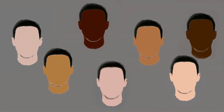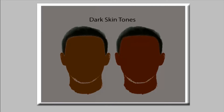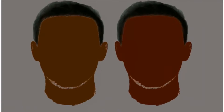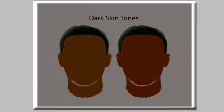Next we're going to look at skin complexions when combined with those skin tones. There are a wide variety of skin complexions, but we're going to use just three basic ones: the darker skin tone, the medium skin tone, and the fair skin tone. With dark skin tones, you can have either cool or warm skin tone.